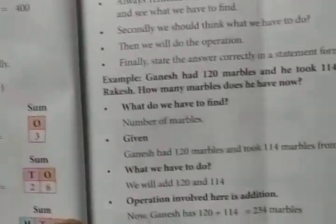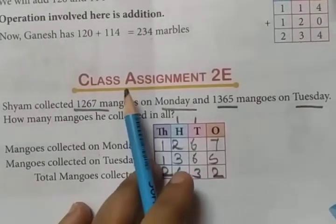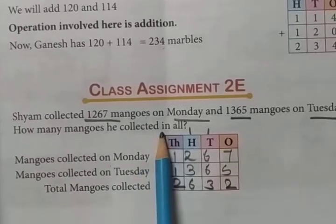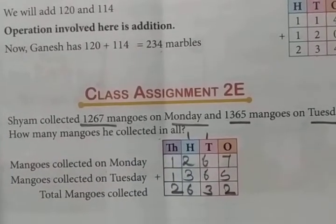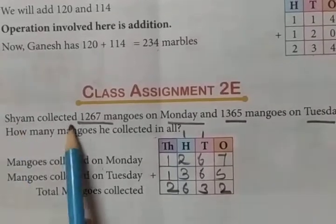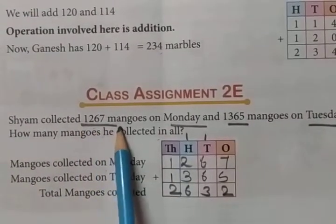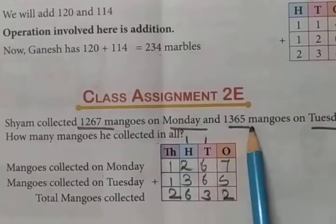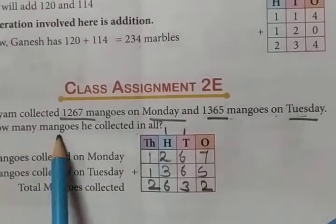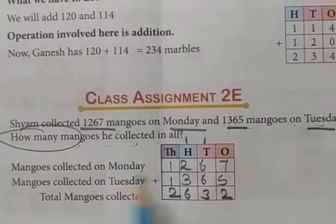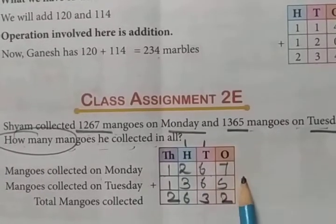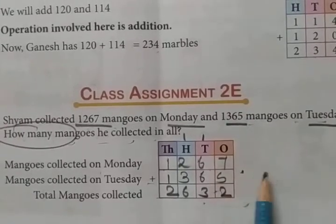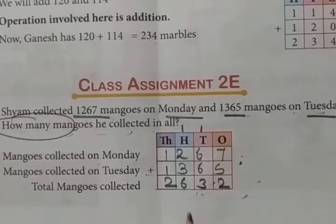Now this is our final section of chapter number two — story sums. As I have told you many times, it depends on the condition — what they are asking you to do. For example: Sham collected 1264 mangoes on Monday and 1365 mangoes on Tuesday. How many mangoes did he collect in total? So you will write the second number and find the sum of these two numbers.